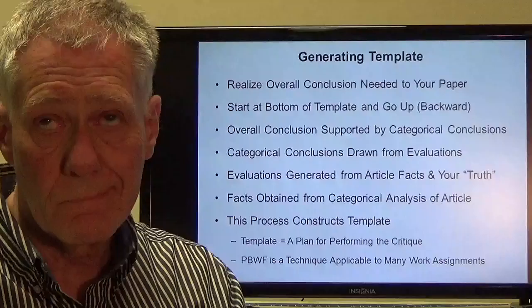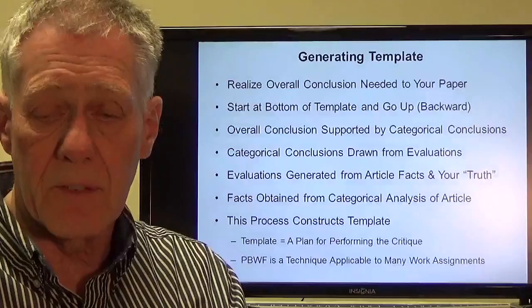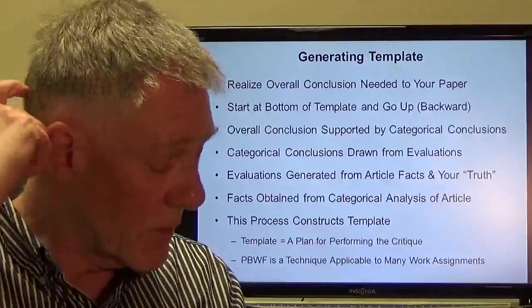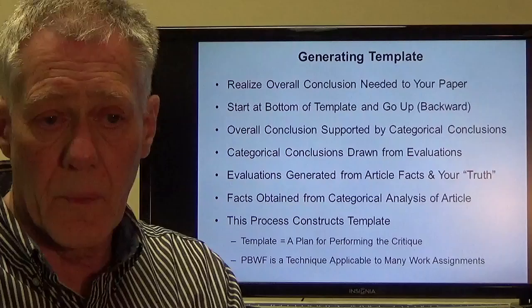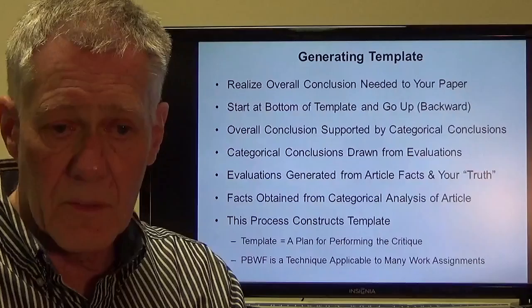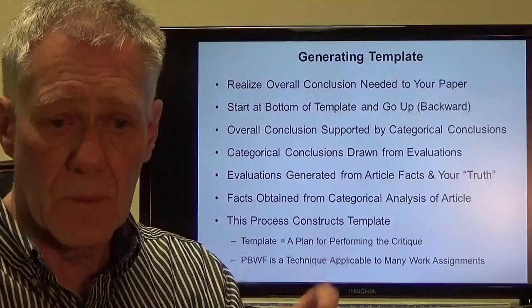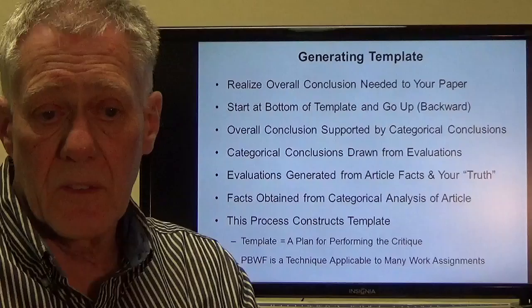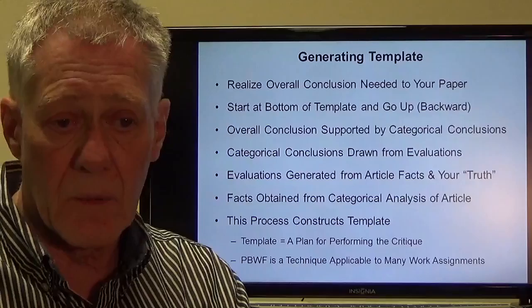How would you generate the template if you didn't have it? Start with the end. You realize you need some sort of overall conclusion to this paper. If we're going to do that, we need to have some other conclusions — the overall one is going to be based on individual ones. Where do we get those? We need them from the various categories. Where do we get those conclusions? We've got to do some evaluations under each one of those categories. Where do we get those evaluations? We get them from the article — the various facts, and the rest of it. Then you work right back up, and that constructs the template.